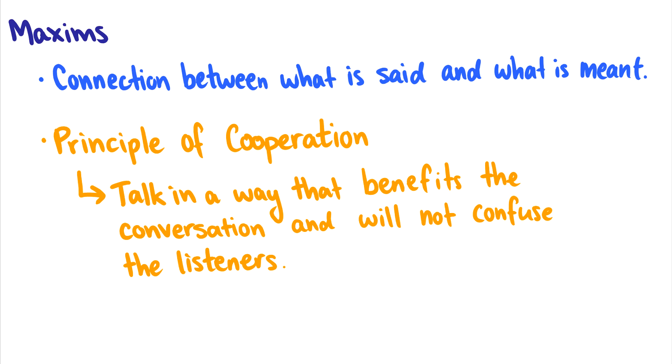So let's start with talking about Grice's maxims, and Grice's maxims are this bridge between what we say and what we mean. Now when we have conversations, we say a lot of things, and according to Grice, we adhere to something called the principle of cooperation. In other words, when we have a conversation, we always try to make it so everyone in the conversation can understand us, we benefit the conversation when we contribute, and we're not trying to confuse other people.